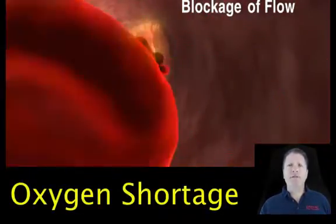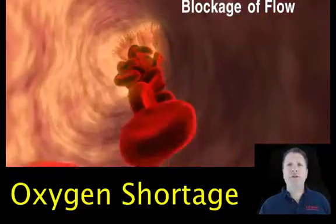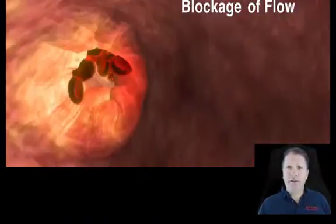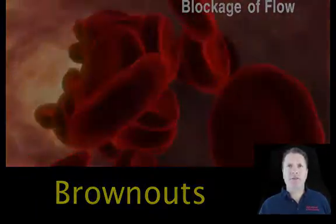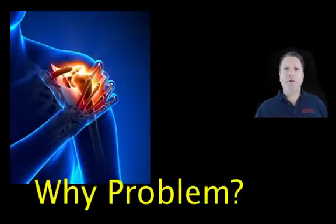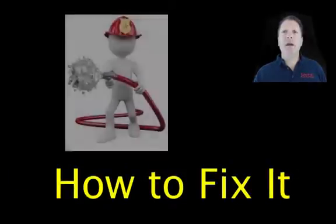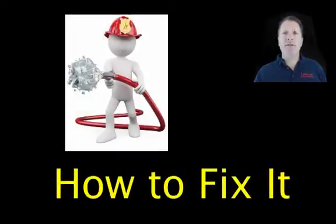First, how oxygen shortage triggers inflammation in your plumbing. Second, how that inflammation creates an energetic brownout in your cells. Third, why the brownouts are a problem. And fourth, how do we fix the plumbing and the brownout by squirting oxygen down your pipes.